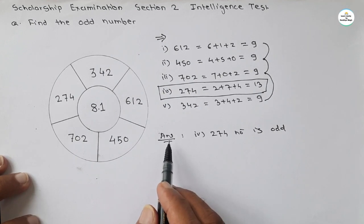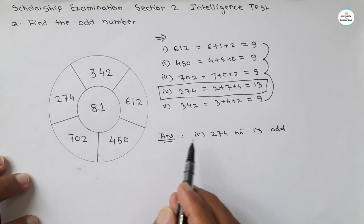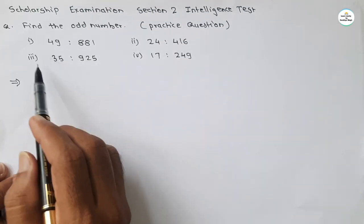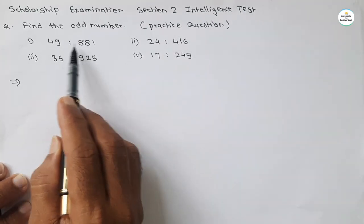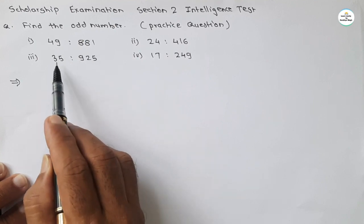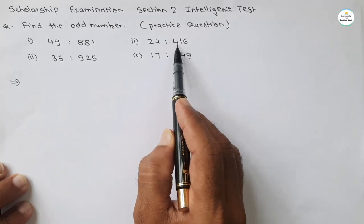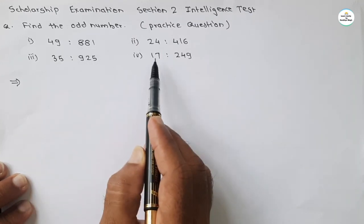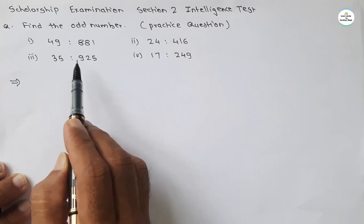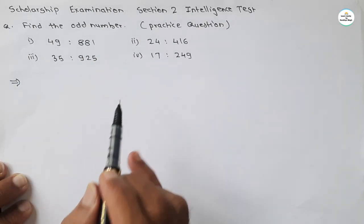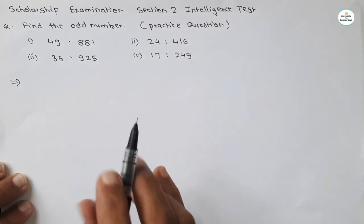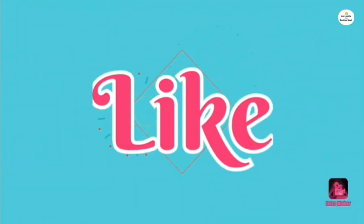As usual, there is a practice question for you. Solve this question and write your answer in the comment section — I will give the solution in the next video. The practice question is: find the odd number. Four pairs are given: 49 relates to 881, 35 relates to 925, 24 relates to 416, and 17 relates to 249. There is a common relation between three pairs — one pair is odd. Find that odd pair.